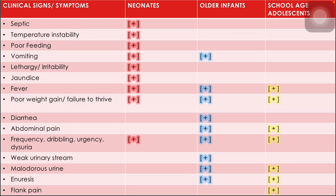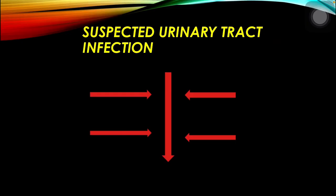In general, manifestations of urinary tract infections are non-specific. However, there are some signs and symptoms associated with UTI that are more common in a specific age group. The following is an algorithm on the diagnosis, workup, treatment, and follow-up of children with urinary tract infection.